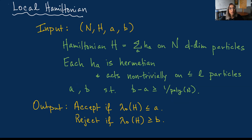The field of quantum Hamiltonian complexity is basically focused on the local Hamiltonian problem. You're given as input a system of n d-dimensional particles and a Hermitian operator H that acts on the system. H is a sum of local terms, meaning each term acts non-trivially on a small number of particles. You're also given two thresholds separated by one over a polynomial, and the goal is to understand the value of the lowest eigenvalue of this matrix.